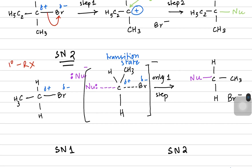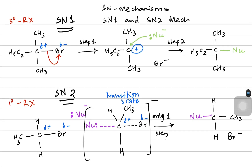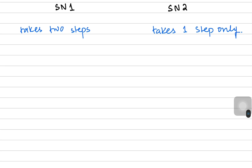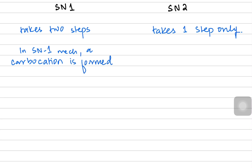In SN1 mechanism a carbocation is formed, but there is no proper carbocation in SN2 because a primary halogenoalkane cannot handle a carbocation. So the second difference is that in SN1 a carbocation is formed, but in SN2 no carbocation is formed.